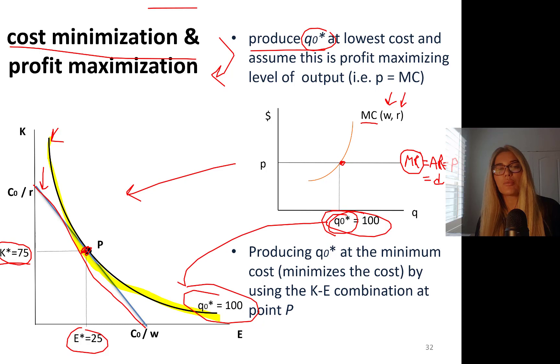This is an example of cost minimization implying profit maximization, because to start with, this profit maximizing output level is the one we are trying to produce at the lowest cost. Producing q0* at the minimum cost by using this K-E combination at point P. Any other cost curve here would give you higher cost.